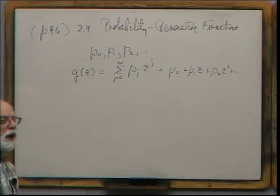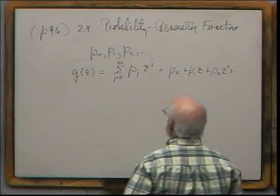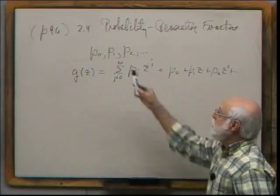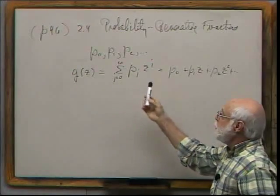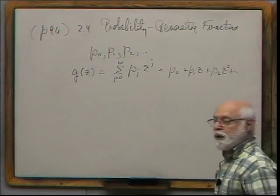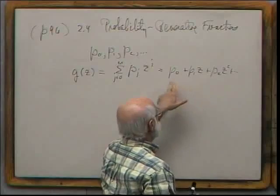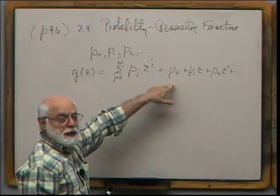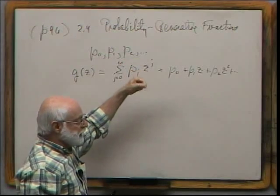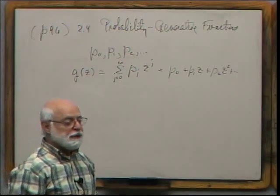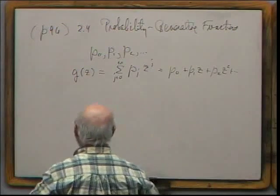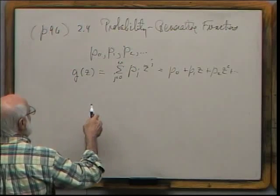The point is that the information is changed from a set of probabilities to a function of z. In many important cases you can actually sum this series and get a simple function, and there are lots of very useful properties. For example, here's a simple example: a Bernoulli variable. The probability it takes value 0 is q and the probability it takes value 1 is p, where p + q = 1.